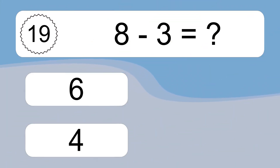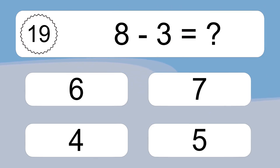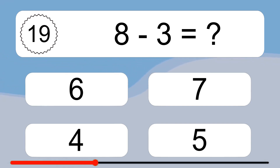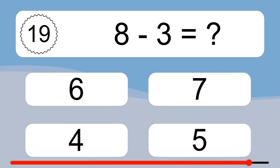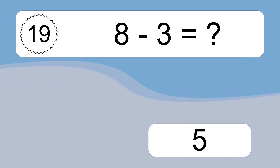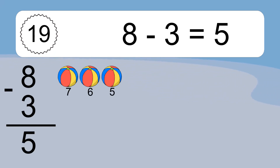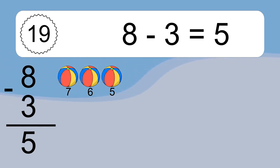8 minus 3 equals what? 8 minus 3 equals 5. Let's count it: 7, 6, 5.